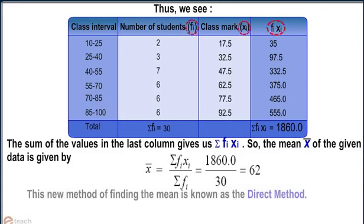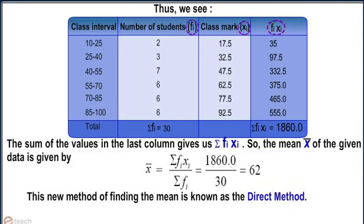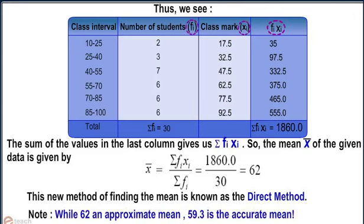This new method of finding the mean is known as the direct method. Note that 62 is an approximate mean and 59.3 is the accurate mean.